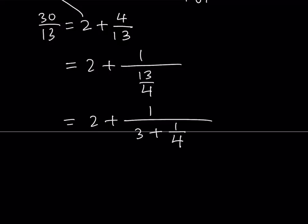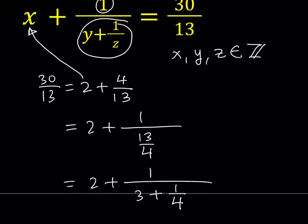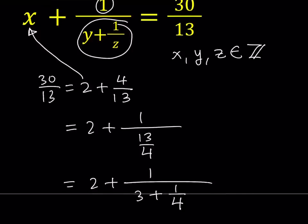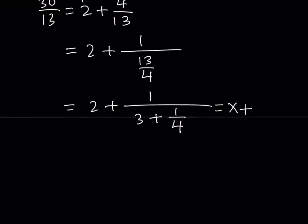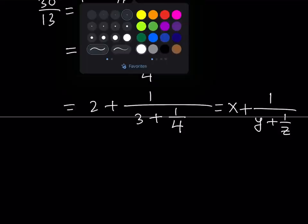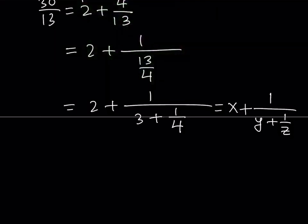Now at this point, I would like to go ahead and set this equal to my original expression, which is 2 plus 1 over 3 plus 1 fourth equals x plus 1 over y plus 1 over z. Now what is that supposed to mean? Well, I do have 2 on the left-hand side and x on the right-hand side. So I can safely say that x is supposed to be a 2 here, or at least we can safely say that x can be 2. It's going to work.